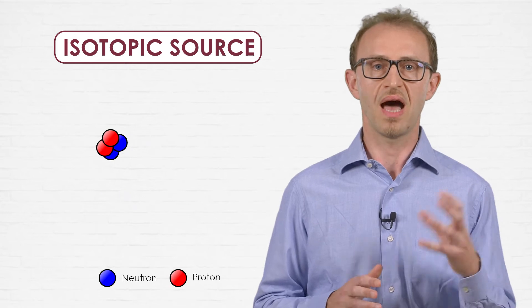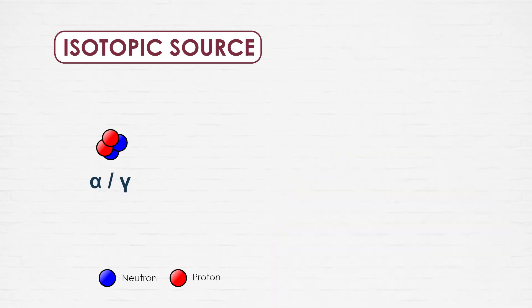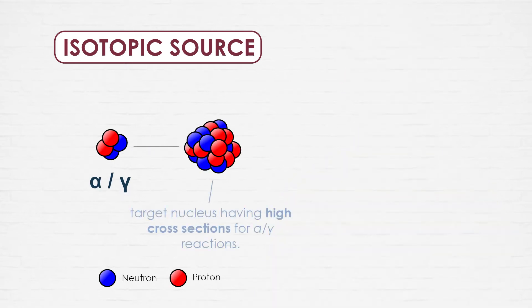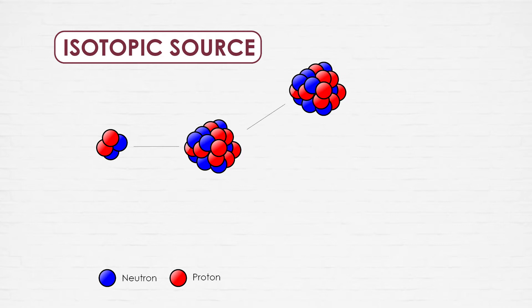Another way of producing neutrons is to mix alpha and gamma emitters with target nuclei having high cross-sections for alpha-N or gamma-N reactions. In such a coupling, target nuclei react with alpha or gamma particles and free neutrons.